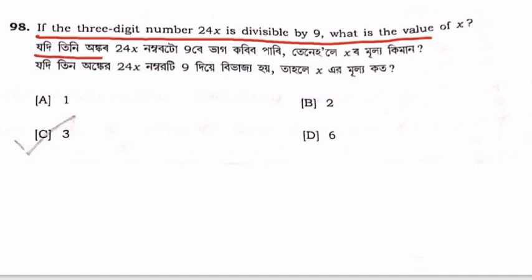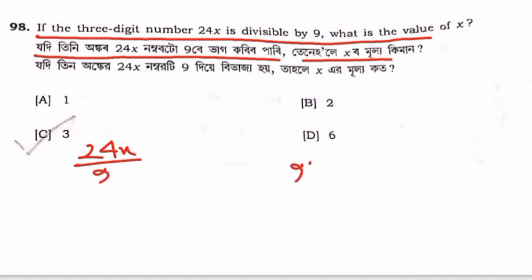We will think about whether the number 24x is divisible by 9. Starting from the first part, we consider 24 minus 9. The right side equals the left side, so for 24, the right side is equal to the left side — therefore we find the last digit.